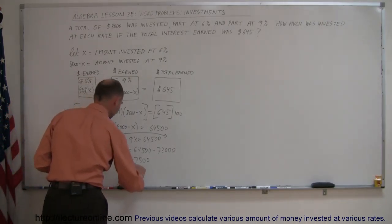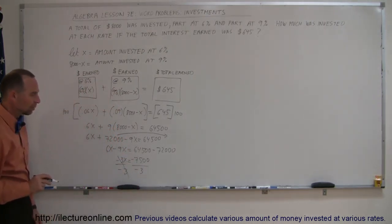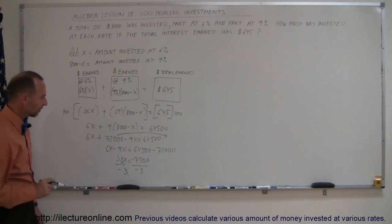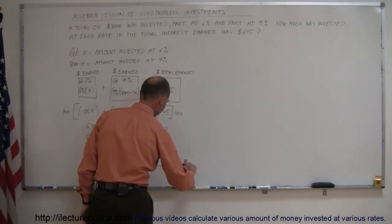Now we divide both sides of the equation by the numerical coefficient in front of the X. The minus 3s cancel out. Notice the negatives here will cancel out, and 3 goes into 7,500 2,500 times. So X equals 2,500.